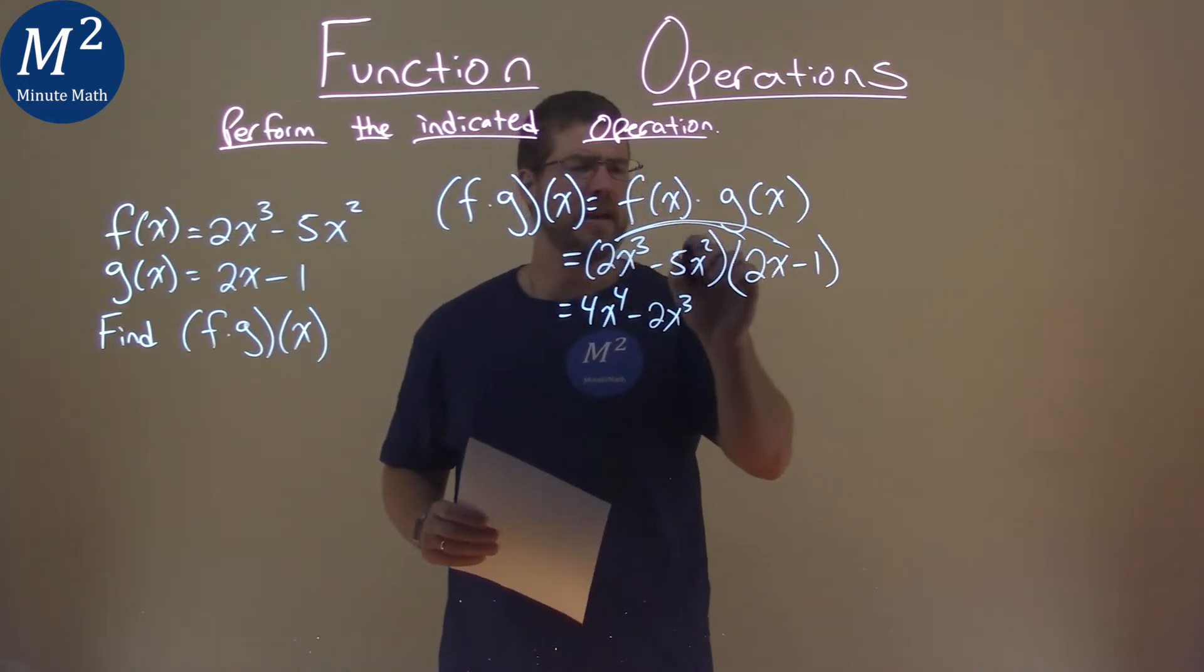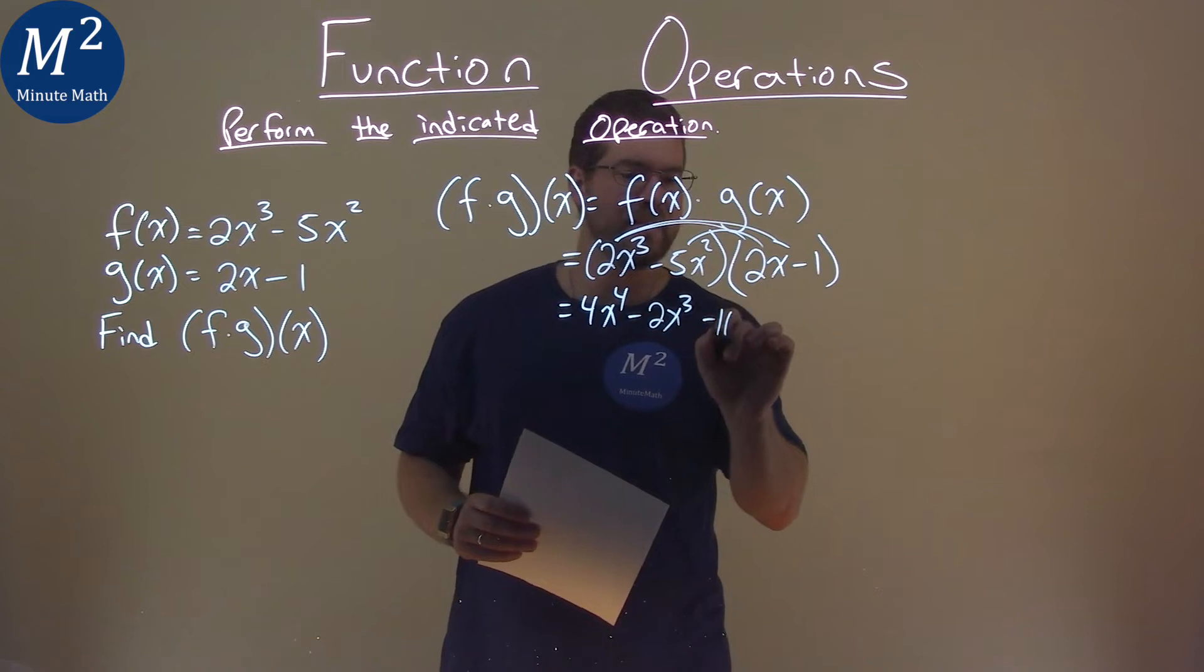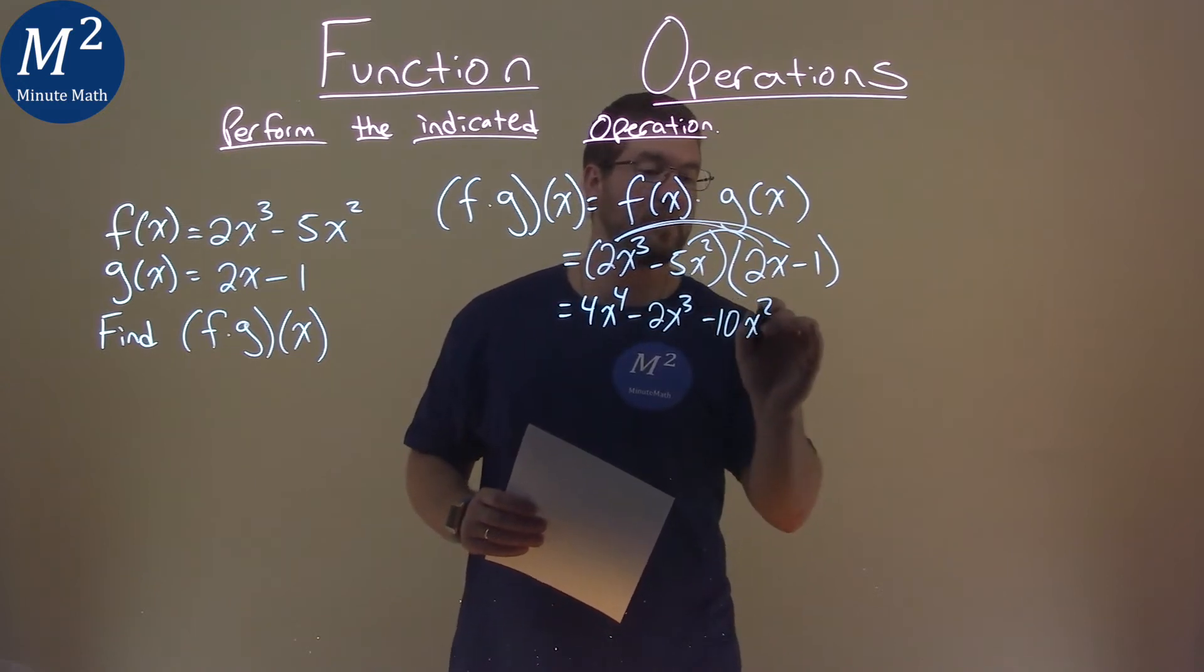Keep on going. Negative 5x squared times 2x is a negative 10x squared, or x to the third, excuse me.